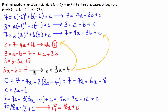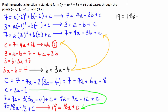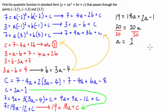We know that c = 2a - 1, so substituting into 19 = 18a + c gives us 19 = 18a + (2a - 1). Combining like terms and moving the 1 to the left: 19 + 1 = 20 = 20a. Dividing both sides by 20, we get a = 1. We can then substitute a = 1 into b = 3a - 4, giving b = 3(1) - 4 = -1.